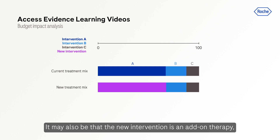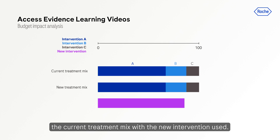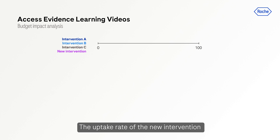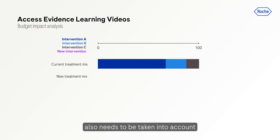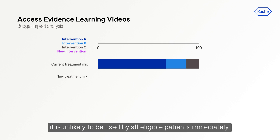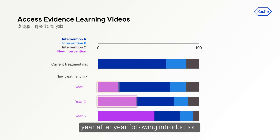It may be that the new intervention is an add-on therapy, in which case the new treatment mix would comprise the current treatment mix with the new intervention used additionally by a certain proportion of patients. The uptake rate of the new intervention also needs to be taken into account. When a new drug becomes available it is unlikely to be used by all eligible patients immediately; it is more realistic to model its use increasing year after year following introduction.